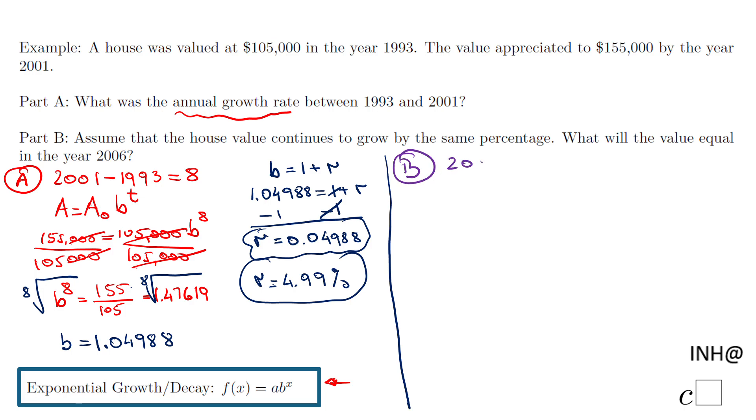First, 2006 minus 1993 equals 13—we have 13 years between 2006 and 1993. So we use A equals A₀ times b to the t. Again, the same formula: A₀ is $105,000.